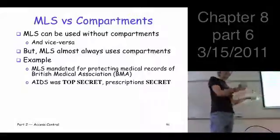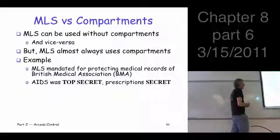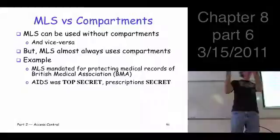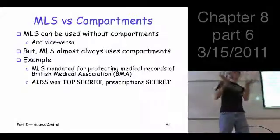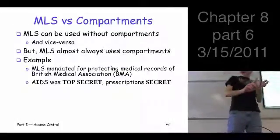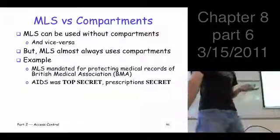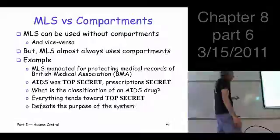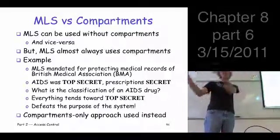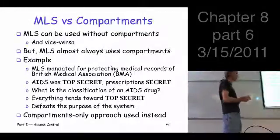How do you solve these contradictory cases? In practice, what happens is you push everything to top secret, which makes life easier but becomes pointless — doctors, nurses, and administrators all need top secret clearance just to do their jobs. In this particular case, what they ended up doing was using only one level and creating a bunch of different compartments, which seemed to actually work.